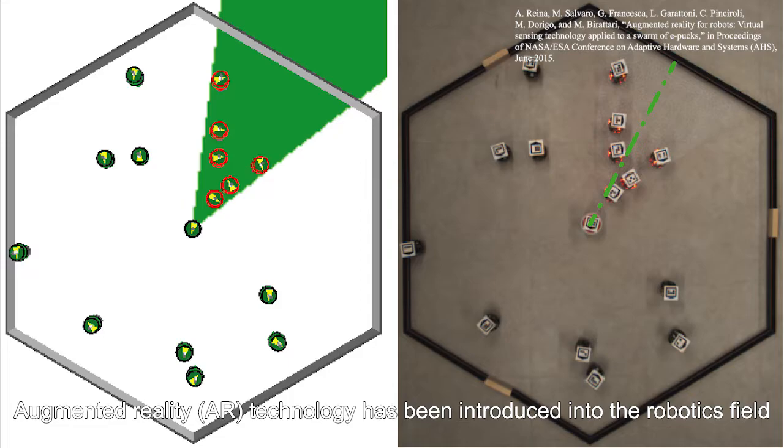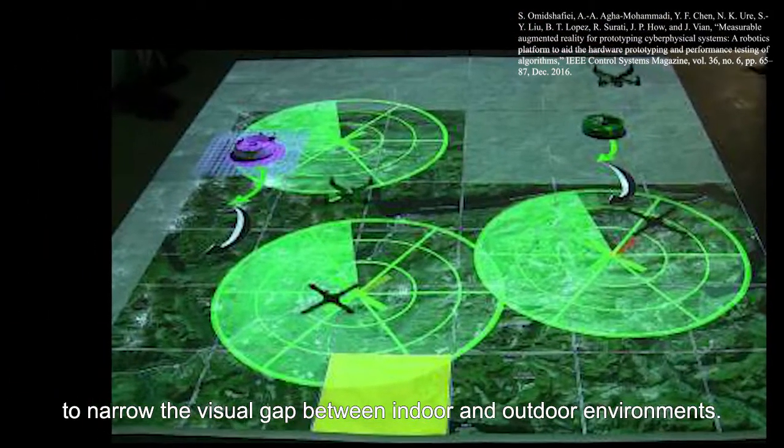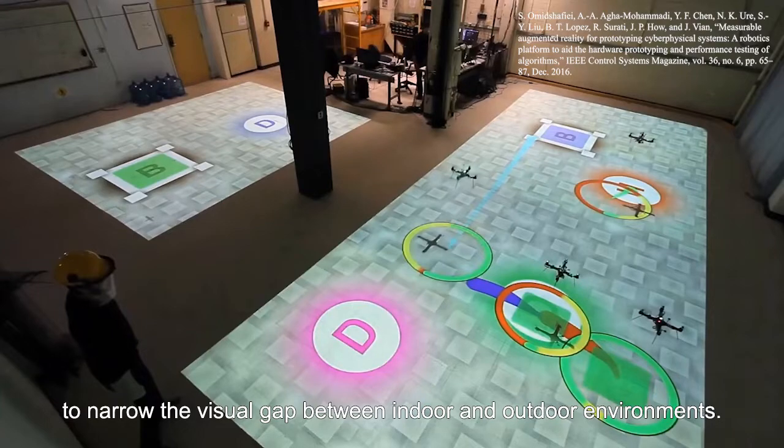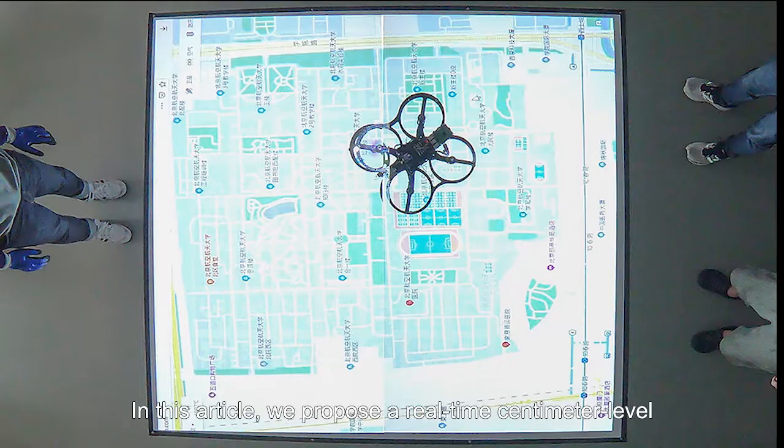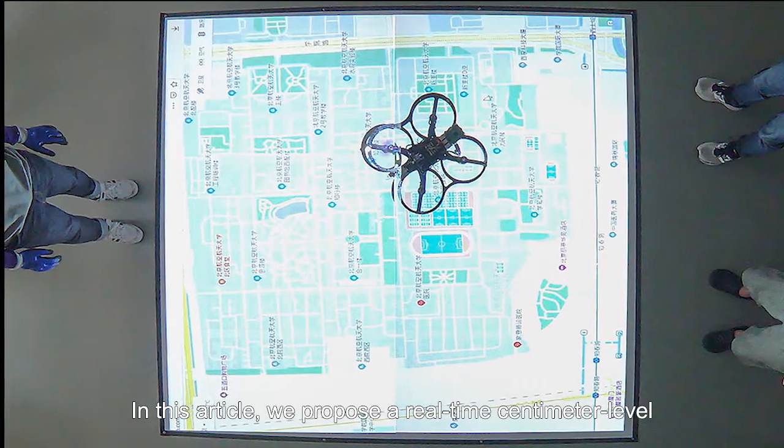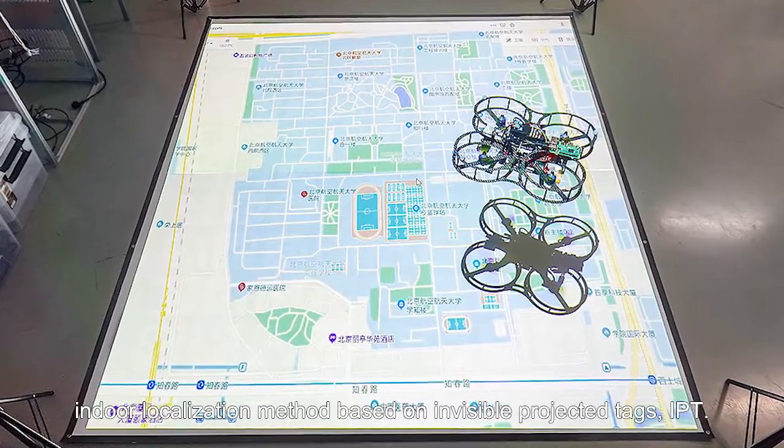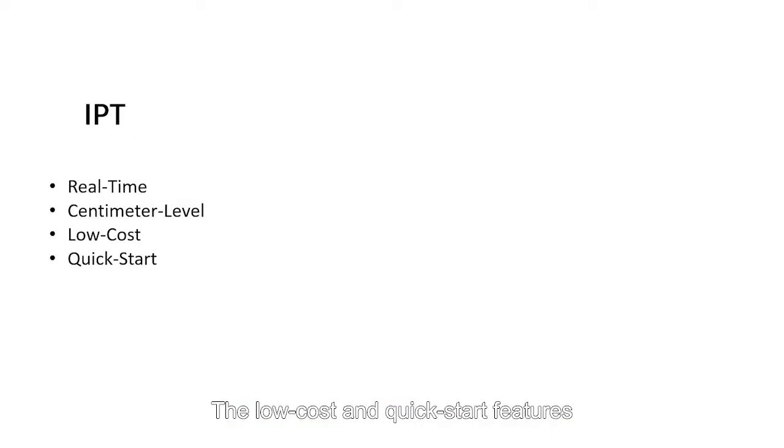Augmented reality technology has been introduced into the robotics field to narrow the visual gap between indoor and outdoor environments. In this article, we propose a real-time centimeter-level indoor positioning method based on Invisible Projected Tags (IPT).